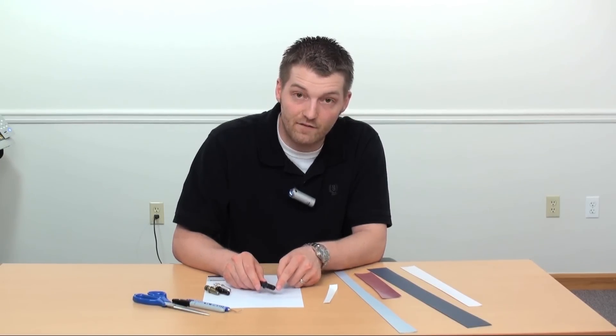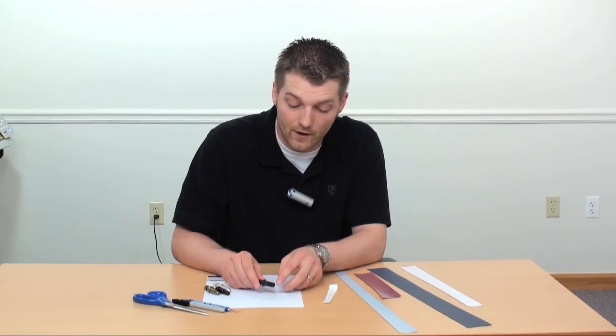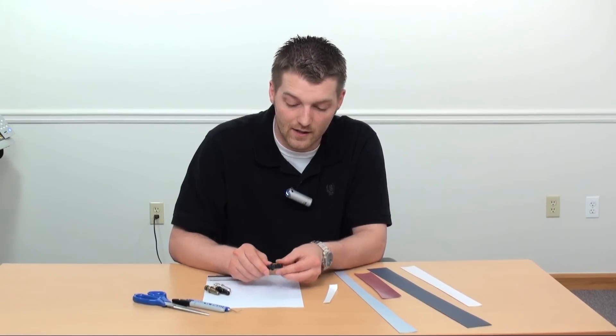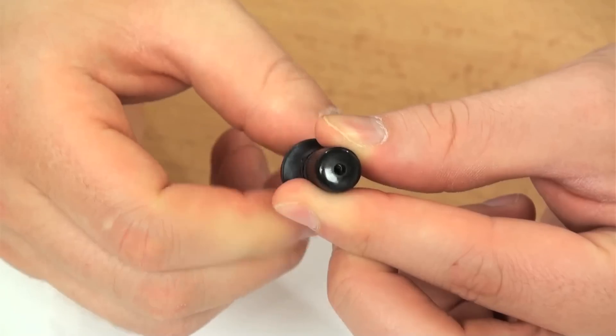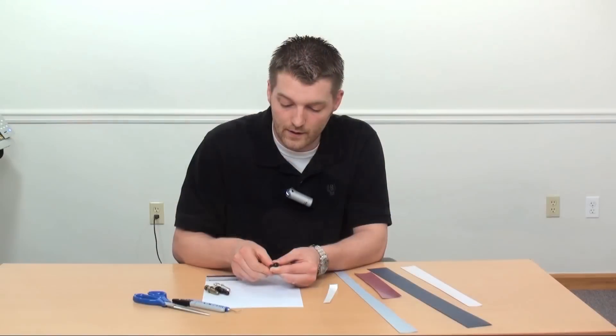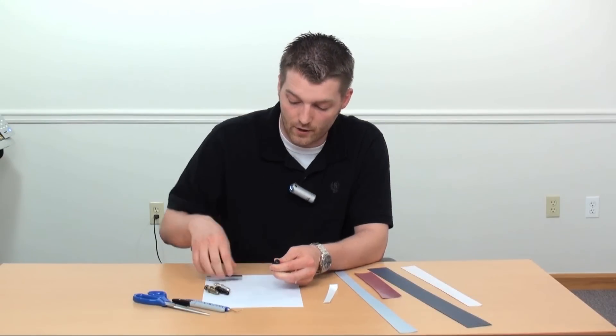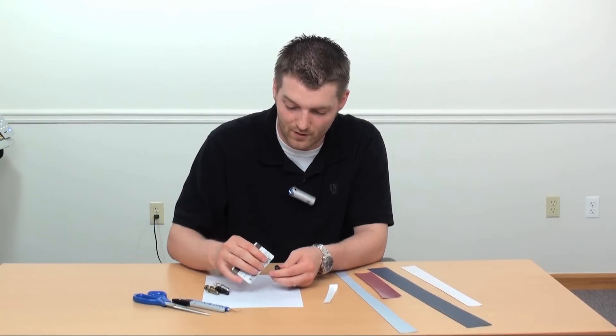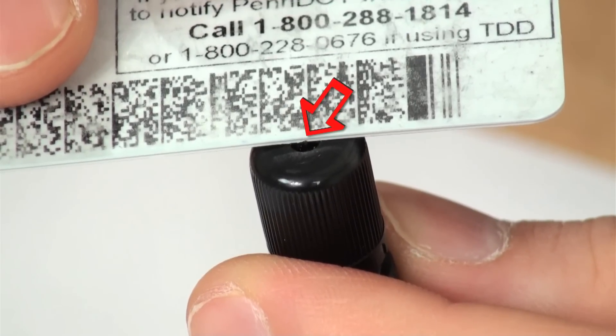You really want the extension of this blade to only be going out about a half of a credit card's thickness. So I'm going to retract and adjust this back. And then hold a credit card, actually I'll hold a driver's license up to it, just in case you thought you were going to get my credit card number.